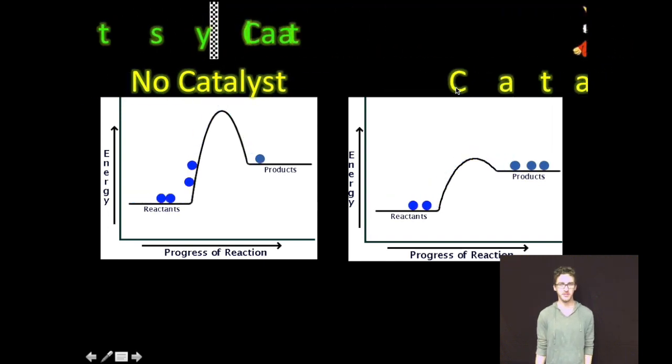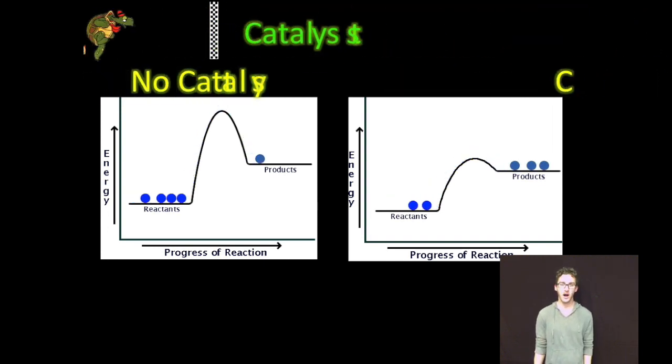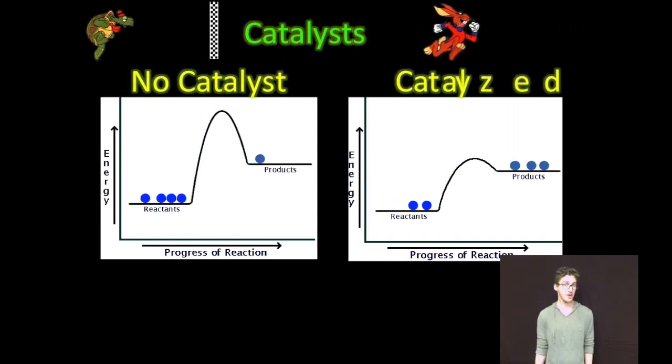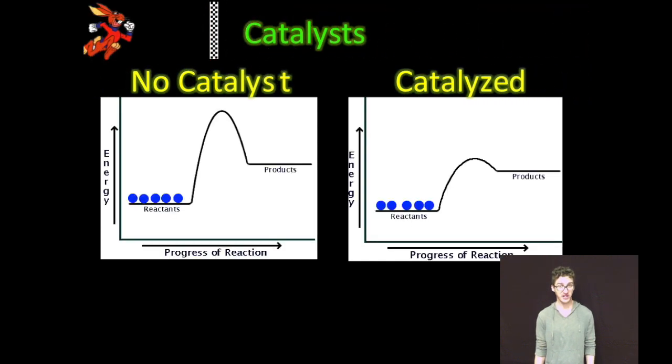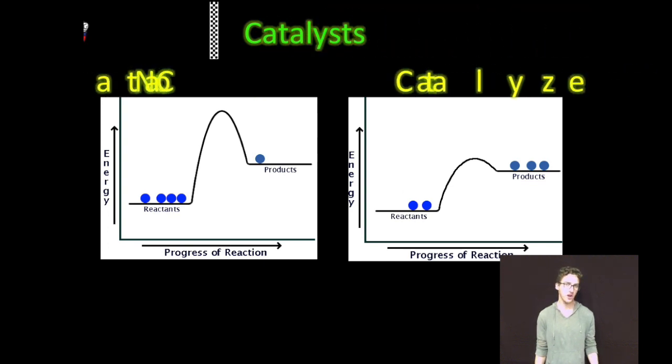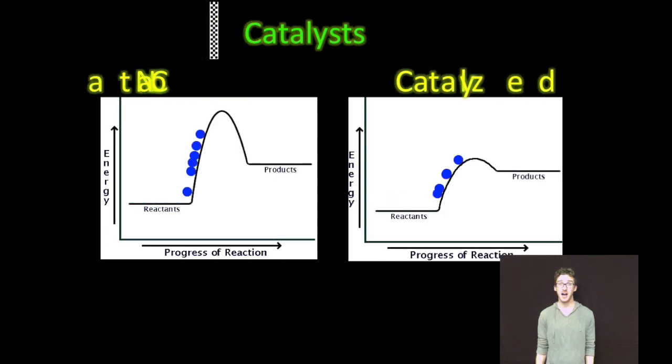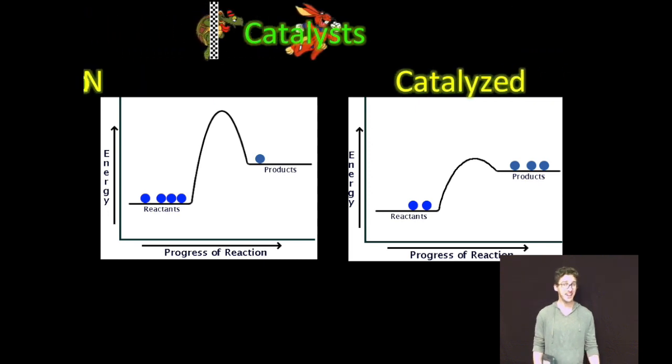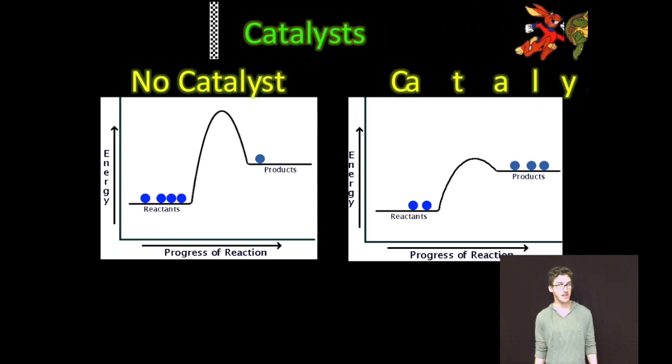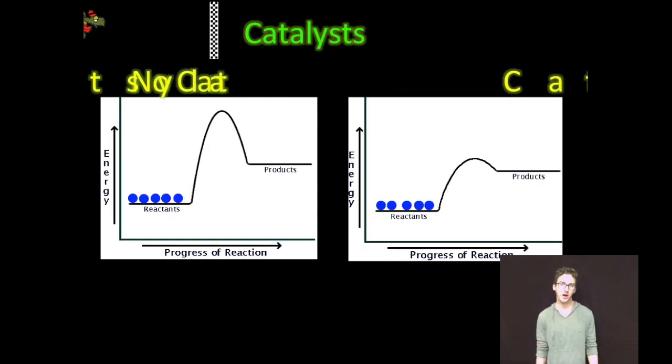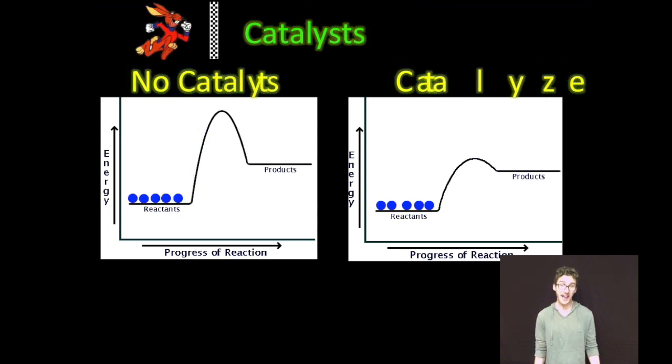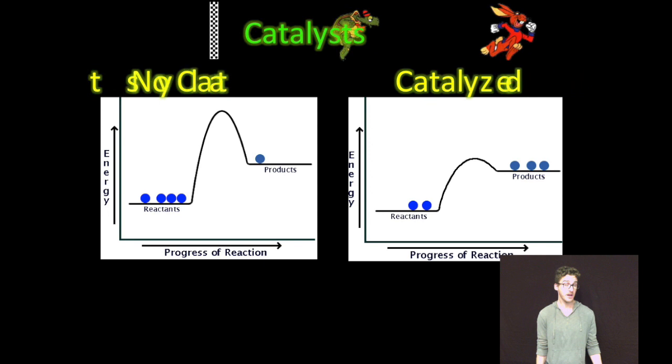As you take a look at the two animations on your screen, on one side you have a reaction that is not catalyzed. Notice the relatively high activation energy for that reaction. Also notice that the rate is going to be slower because not as many particles will have that high activation energy. On the other side of your screen, notice you have a catalyzed reaction. Because the activation energy has been lowered due to the presence of a catalyst, a greater number of reactive particles has sufficient activation energy in order to react and form product, speeding up the reaction.